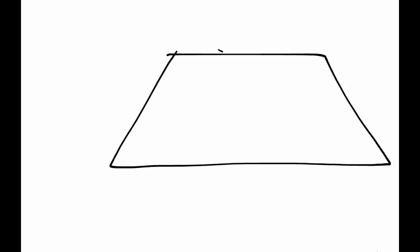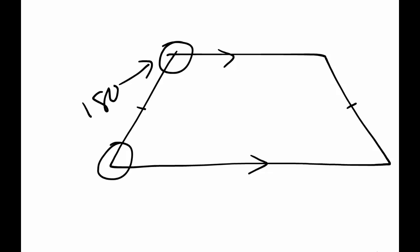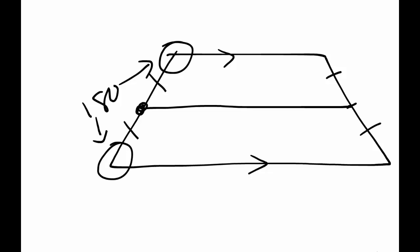To recap: a trapezoid is a quadrilateral with two parallel sides and two that are distinctly not parallel. The consecutive angles on the same side — top and bottom — are supplementary. The median of the trapezoid is the line that goes across the middle, connecting the midpoints of the non-parallel sides, and its length equals the top plus the bottom divided by two — the average of the two parallel sides.